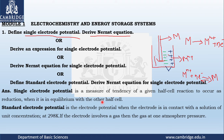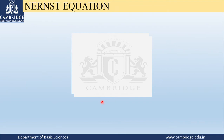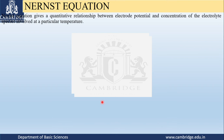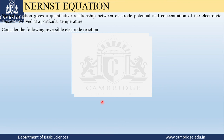Now moving on to the derivation of the Nernst equation. The Nernst equation is a mathematical relation between the electrode potential and the concentration of the electrolyte present in the solution. To explain that, we consider a reversible reaction: M-n-plus plus n electrons gives M. According to the IUPAC convention, the forward reaction is always the reduction reaction.